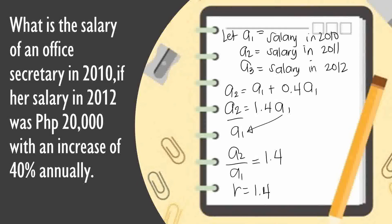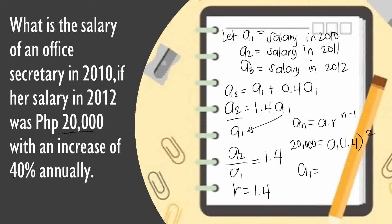Substituting our given values into the formula a sub n equals a sub 1 times r raised to n minus 1: a sub 3 in 2012 was 20,000, so 20,000 equals a sub 1 times 1.4 raised to 3 minus 1, which is 1.4 squared. Solving, a sub 1 equals 10,204.08 pesos. That is the salary in 2010.